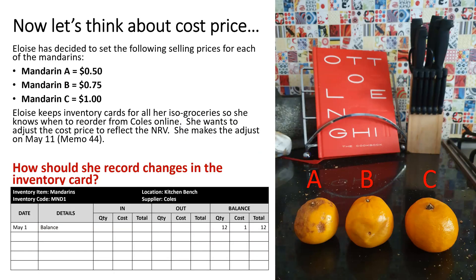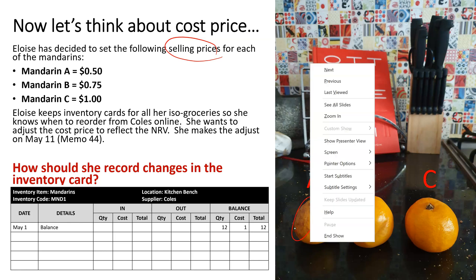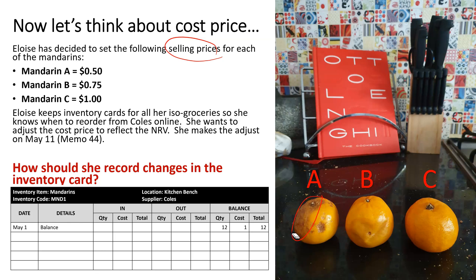Going back to our example, let's think about cost prices. Eloise has decided to set the following selling price for each mandarin. Because Mandarin A is pretty damaged and looks a bit gross, she's decided to sell it for 50 cents. Mandarin B has a little bit of bruising, but she thinks she can get 75 cents for that one. And Mandarin C is looking pretty good — she thinks she can get the dollar she originally paid, so not making any profit but not making any loss.